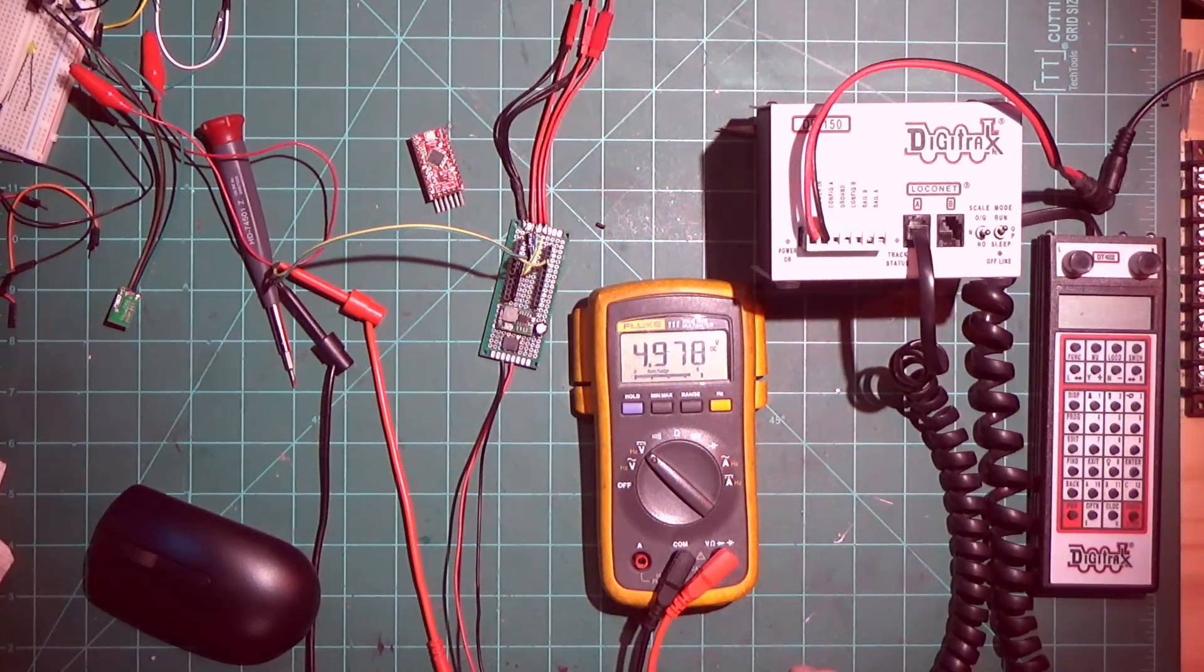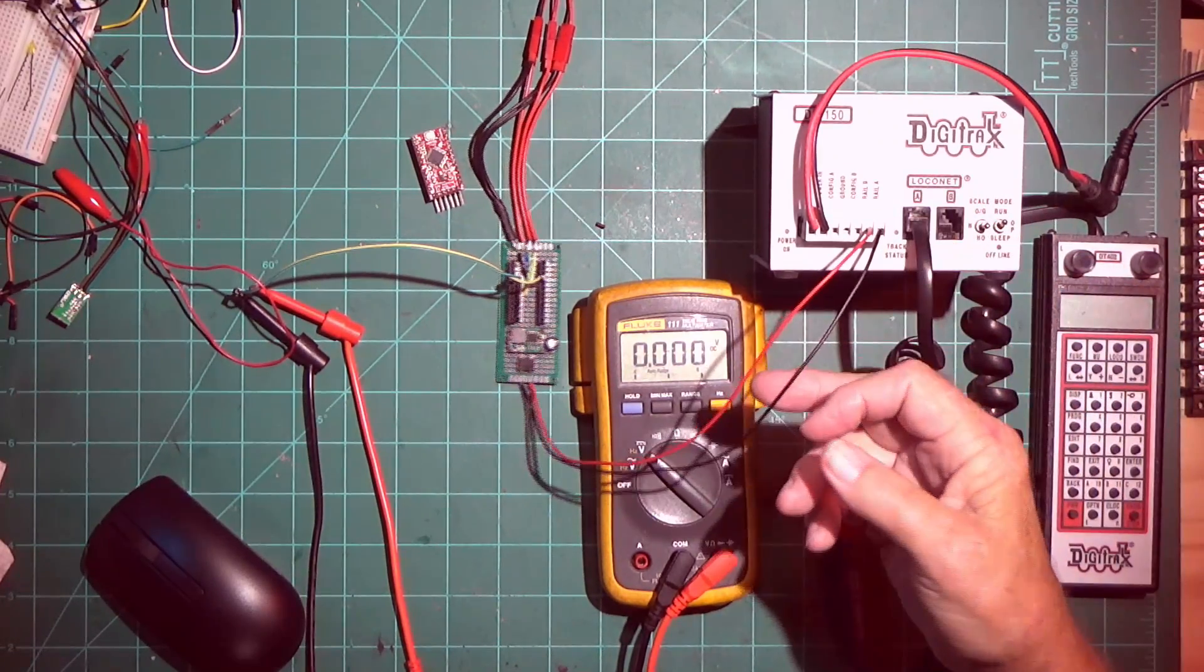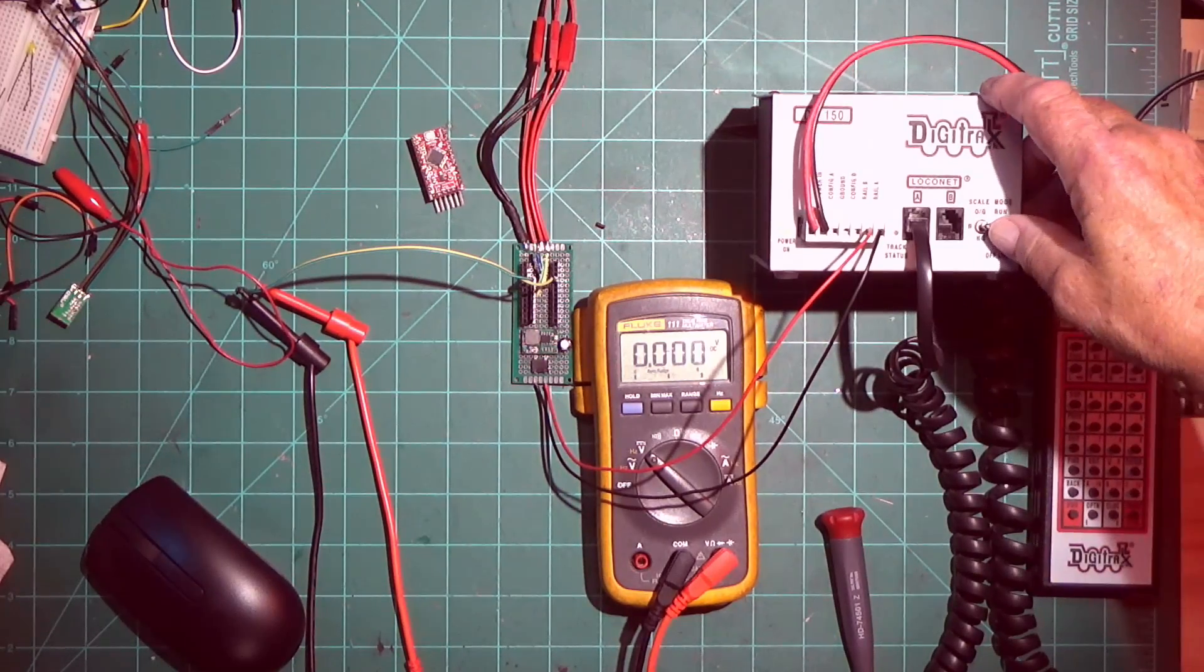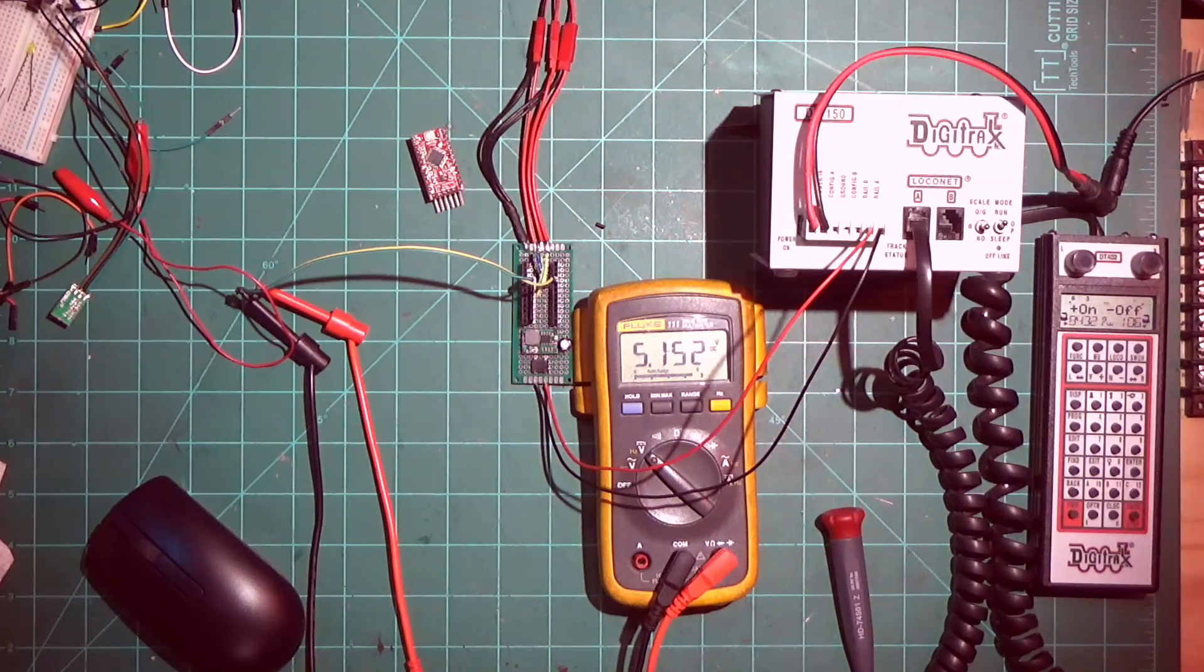Now I have it hooked up to the DCC command station. I have this up on the bench right now because it's easier to do it like this than to bring all the cameras out on the layout. Let me apply power to the Digitrax, put it in run mode, and you get approximately 5.15 volts.